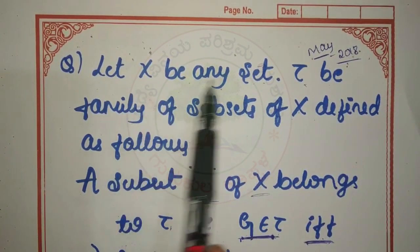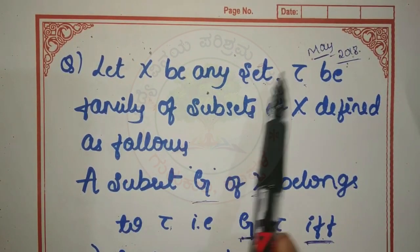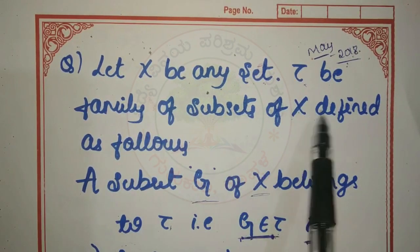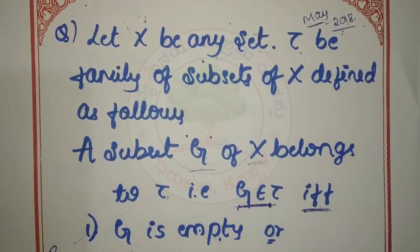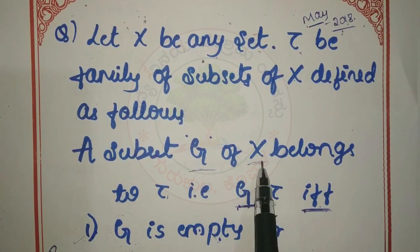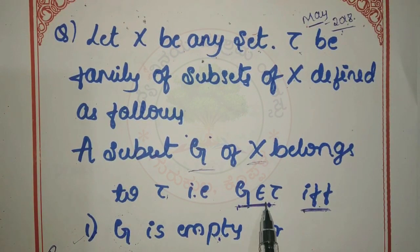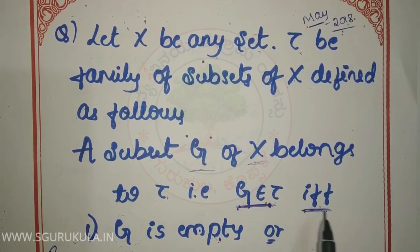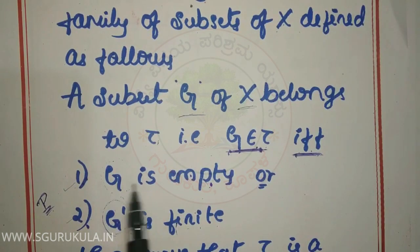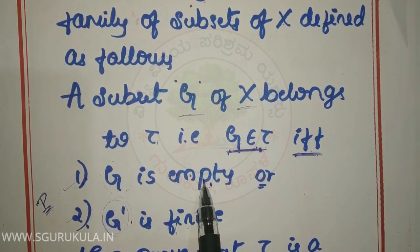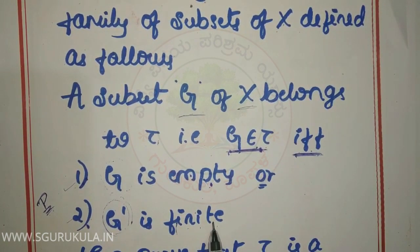Let X be any set and T be a family of subsets of X defined as follows: suppose G is a subset of X, then G belongs to T if and only if G is empty, or G' — the complement of G — is finite.